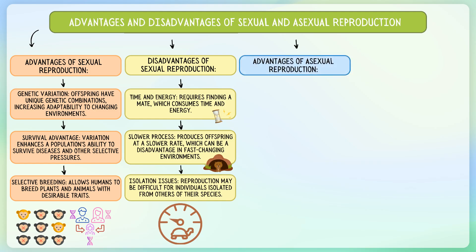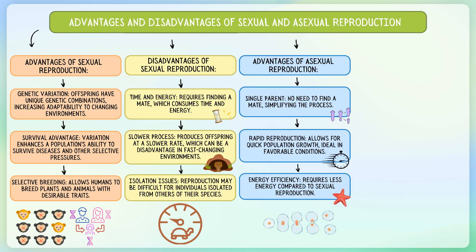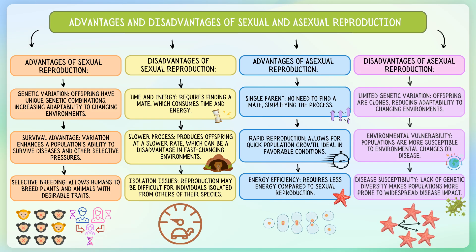Asexual reproduction, involving a single parent, is efficient and allows for rapid population growth, ideal in stable environments. Its main drawback is the lack of genetic diversity, making populations more vulnerable to diseases and environmental changes. Understanding these reproductive strategies is key to grasping concepts like inheritance, variation and evolution.